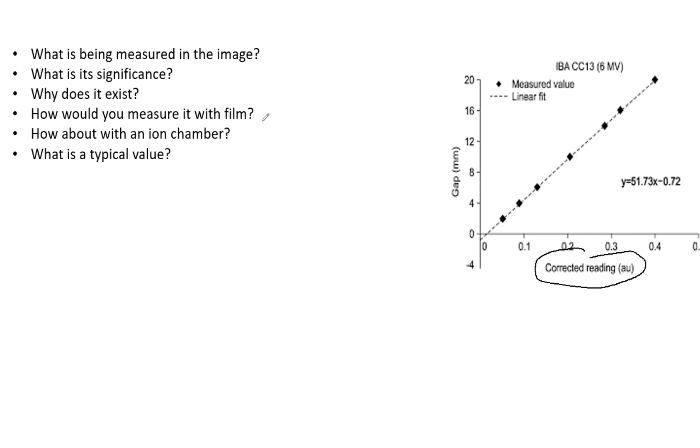You can again do it with film. Varian has its own DLG calculator with pre-made plans for you, so really all you have to do is run it, which is really nice. But ultimately, if you were to make your own, you need to make a series of plans that have this kind of sliding window MLCs, varying leaf widths, and then plot that against the gap. Then you can find the absolute value.